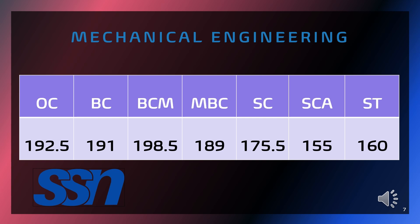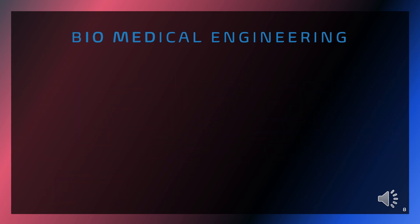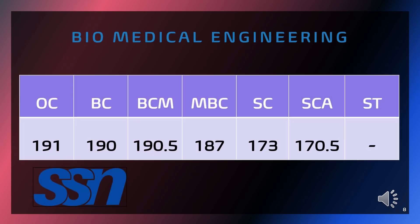Shri Sivasubramania Nader College of Engineering. Cut-off required for ME: OC is 192.5, BC is 191, BCM is 198.5, SCA is 155, ST is 160.